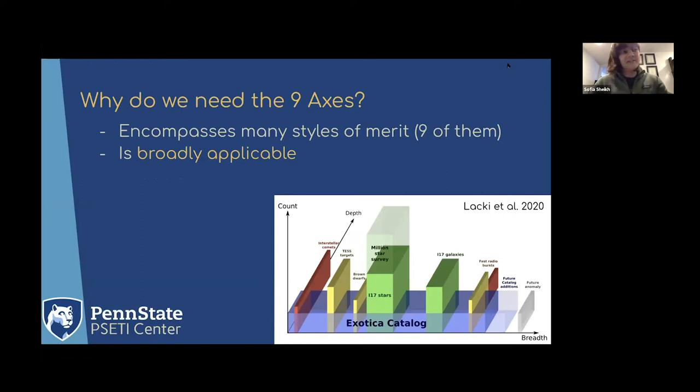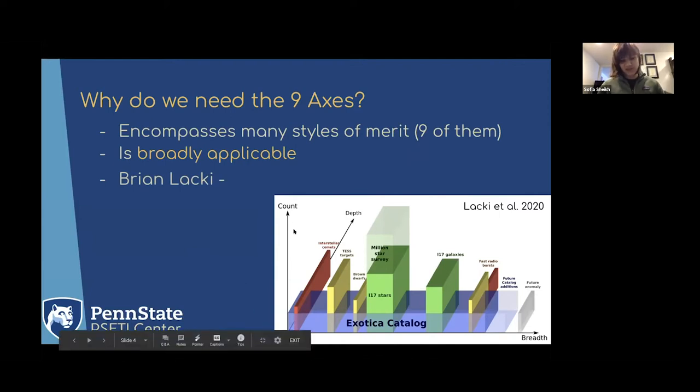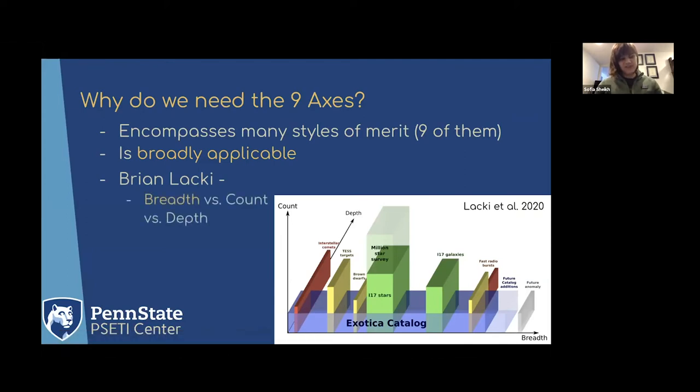So that was the impetus for creating the nine axes. One nice thing about the framework is it encompasses many styles of merit. We included all the variables that we could think of that apply to any kind of technosignature search, and we ended up with nine. The nine axes were built to be broadly applicable. Here I'm going to steal Brian Lackey's definition of broad. In the bottom corner here you see this plot.